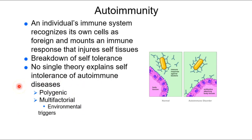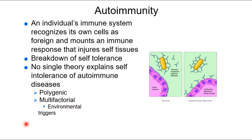Autoimmunity is polygenic — meaning multiple genes are involved — and multifactorial. We've identified a number of different genes with interplay that can potentially lead to an autoimmune disorder. But autoimmunity is also multifactorial; we strongly suspect people won't develop an autoimmune disease without an environmental trigger — a polluted environment, toxic exposure, life stressors, or a different disease state triggering the genes to initiate the autoimmune condition.